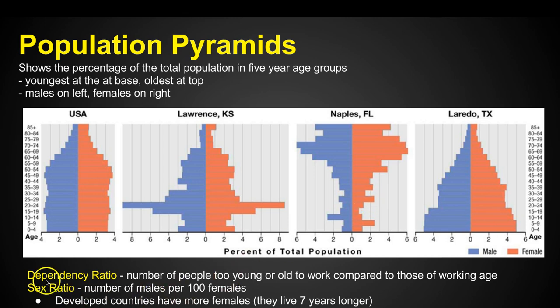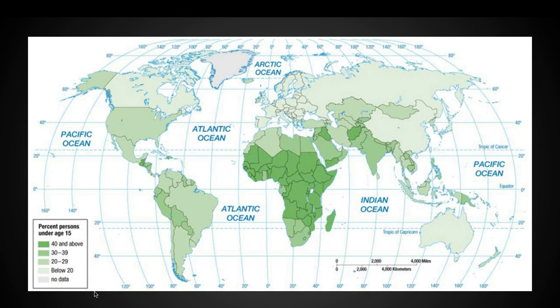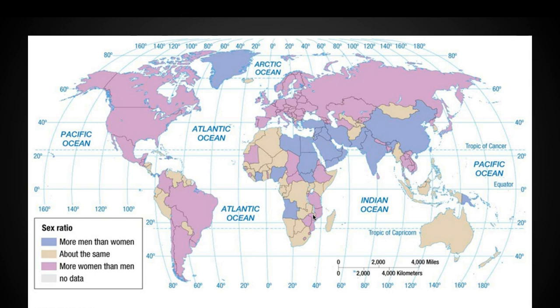Another thing we look at is the sex ratio — the number of males per 100 females. Developed countries have more females because women live longer. Looking at the dependency ratio of the earth, we can see a whole bunch of people under the age of 15. Sub-Saharan Africa has a whole bunch of kids being born. As for the sex ratio, where it's equal is shown in the tan areas on the map.